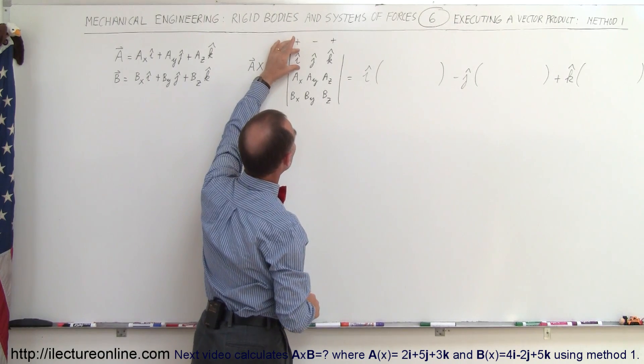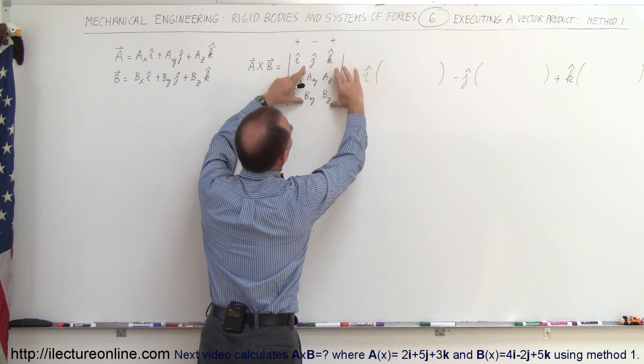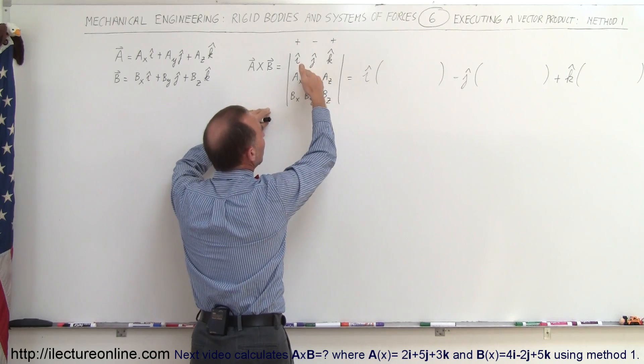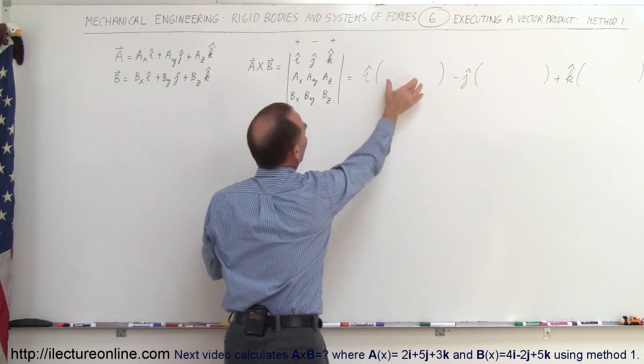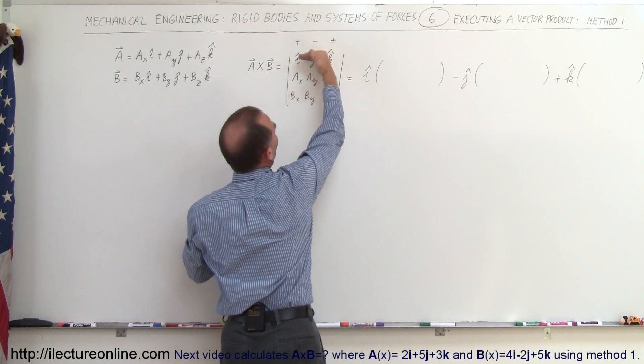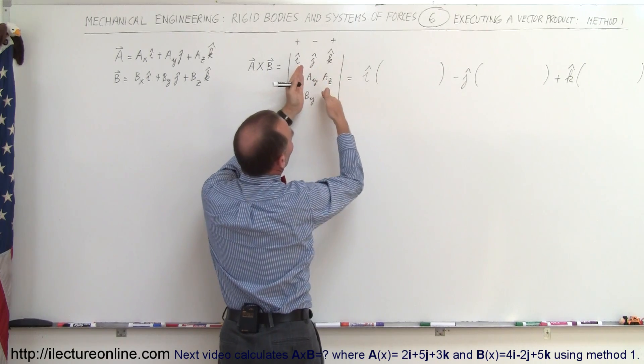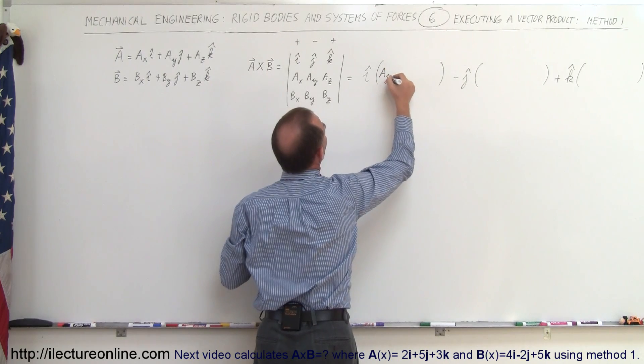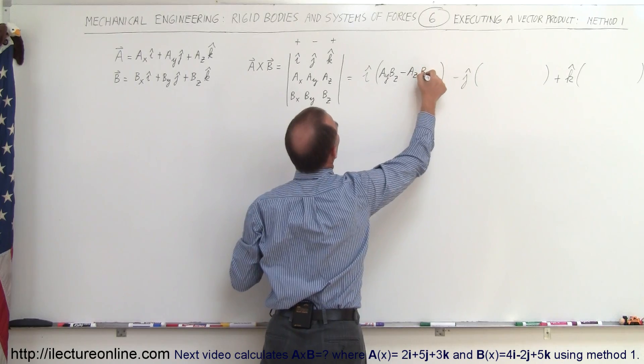And what goes in the parentheses is the following. So when we start out with unit vector i, you then cross out this column and this row, and you're left with these four elements. Then you multiply the cross elements: Ay times Bz, and subtract when you multiply Az times By. So it becomes Ay times Bz minus Az times By.